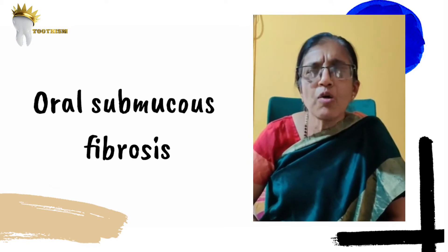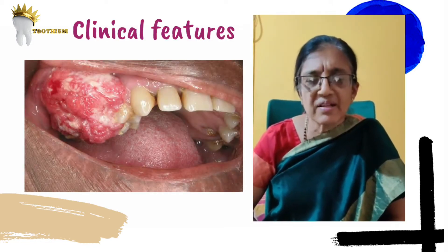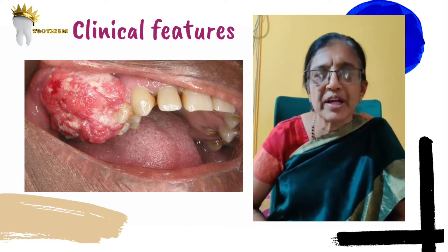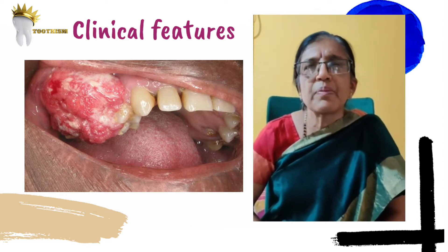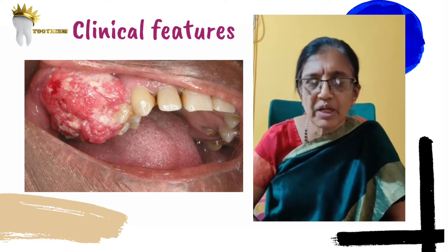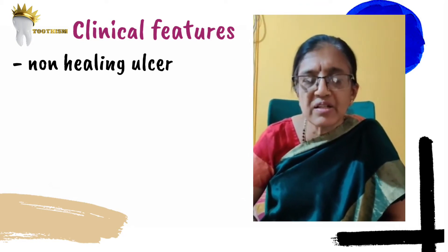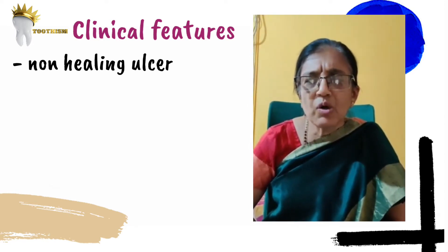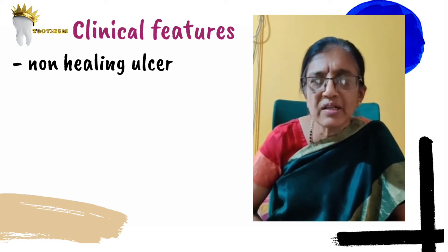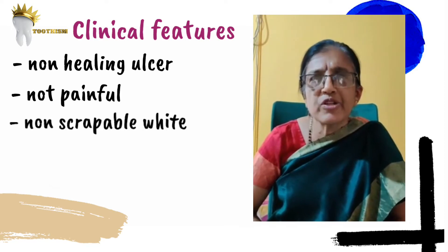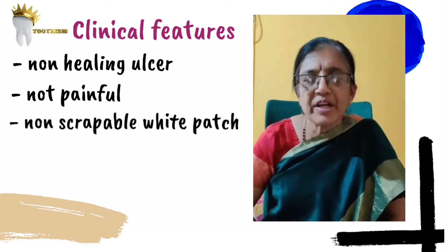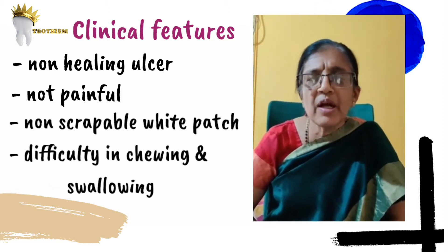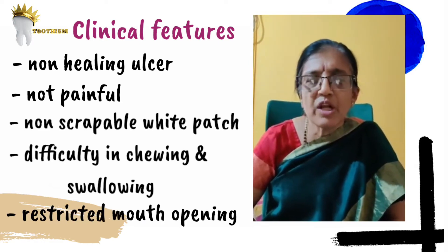How does oral cancer look? Oral cancer looks like a cauliflower growth, a white patch, or a red patch. The patient will have a non-healing ulcer and may apply many indigenous medicines and visit several doctors with no avail. A non-healing ulcer that is not painful, a white patch that cannot be scraped, or a red patch are warning signs.